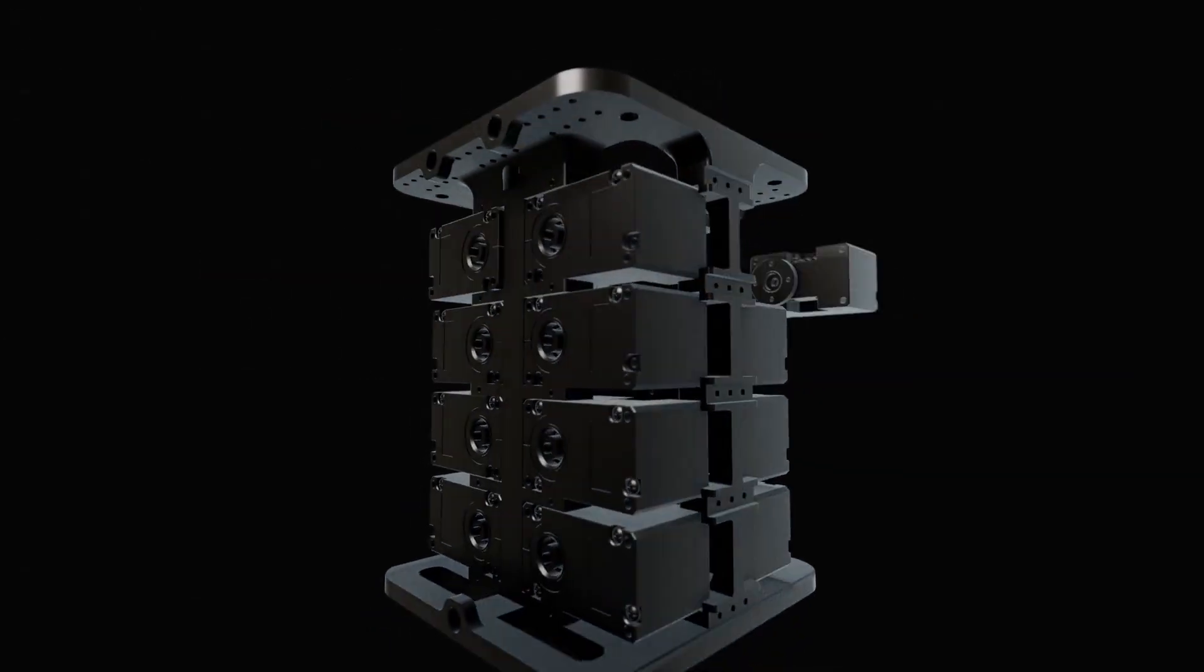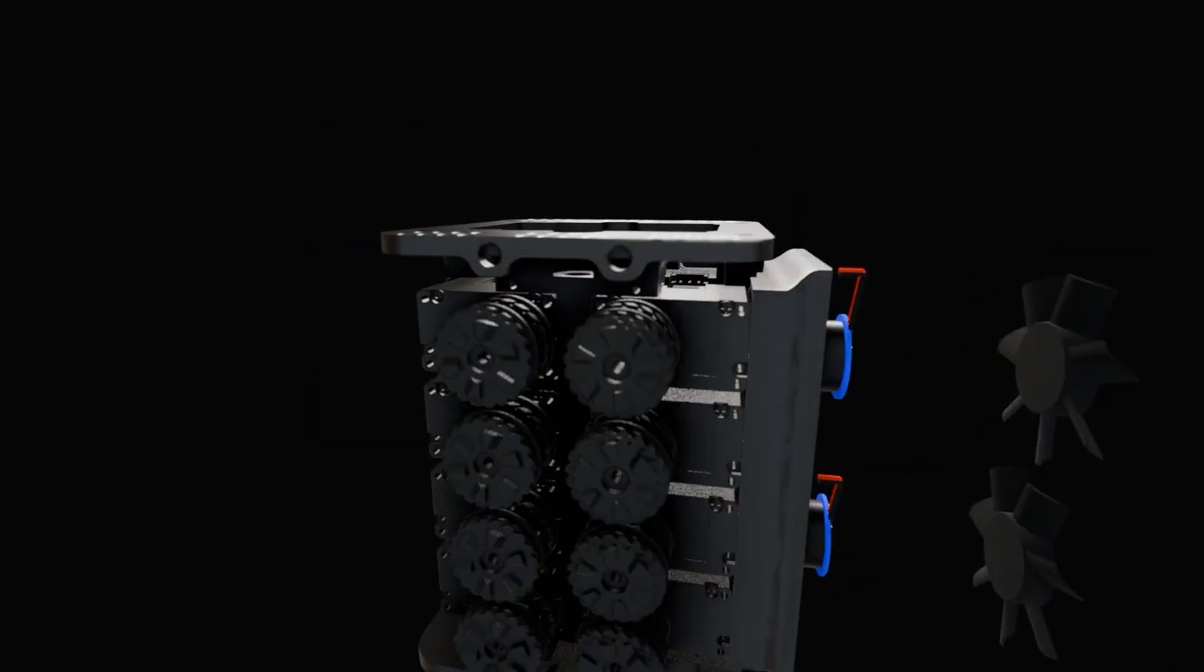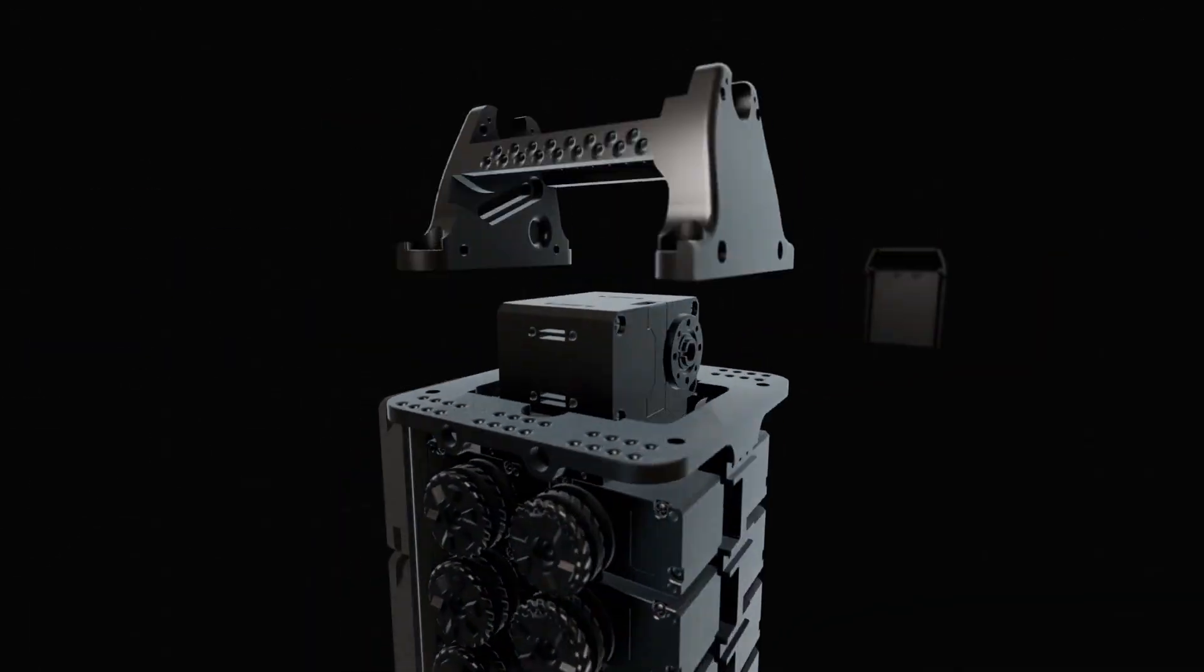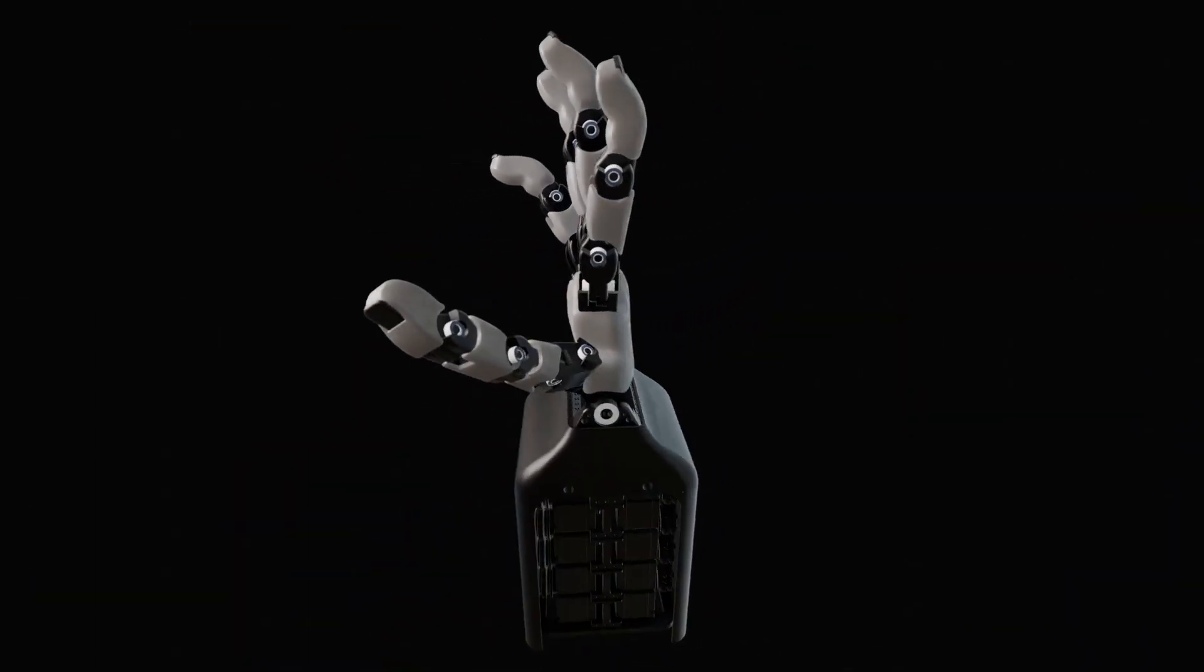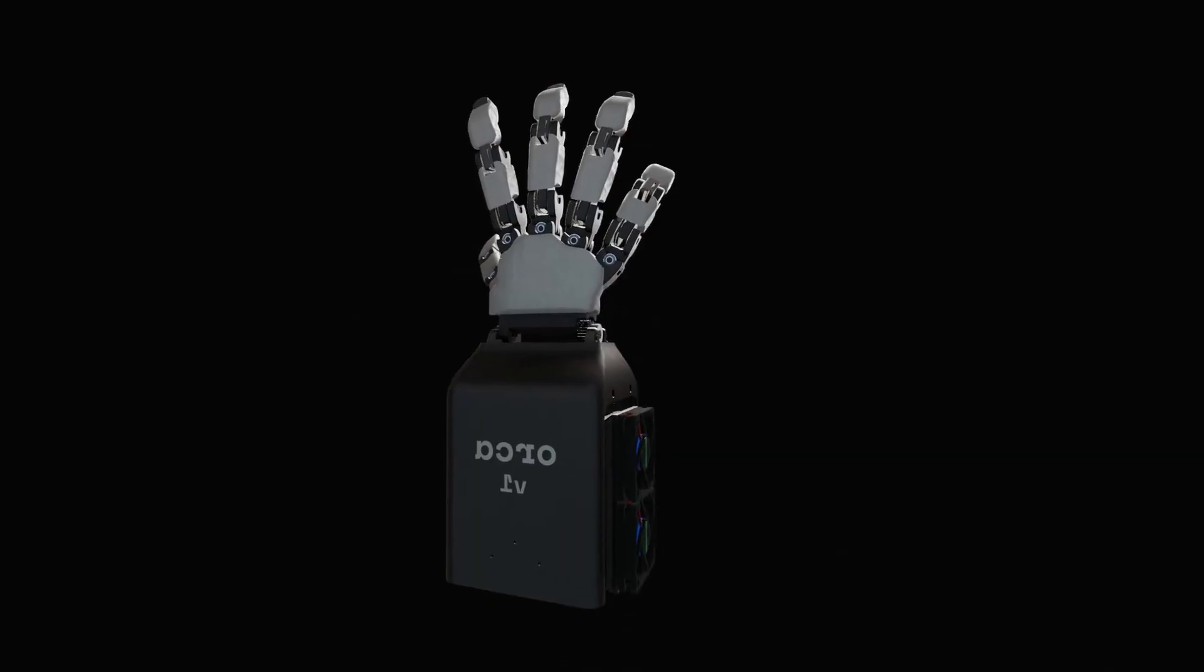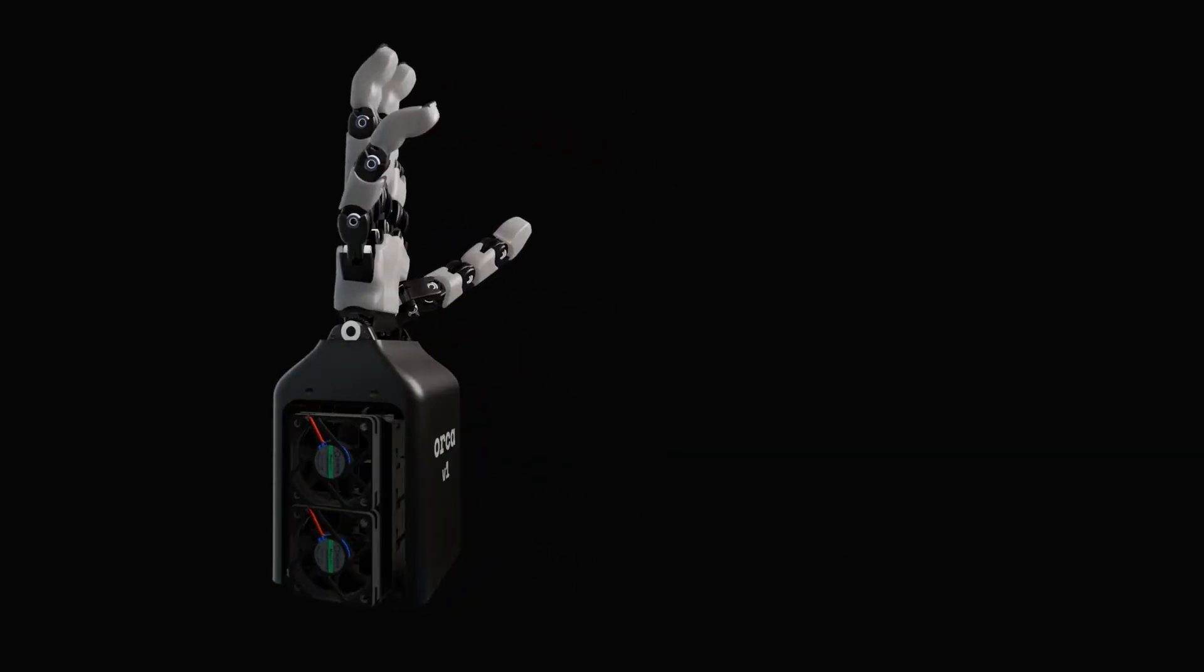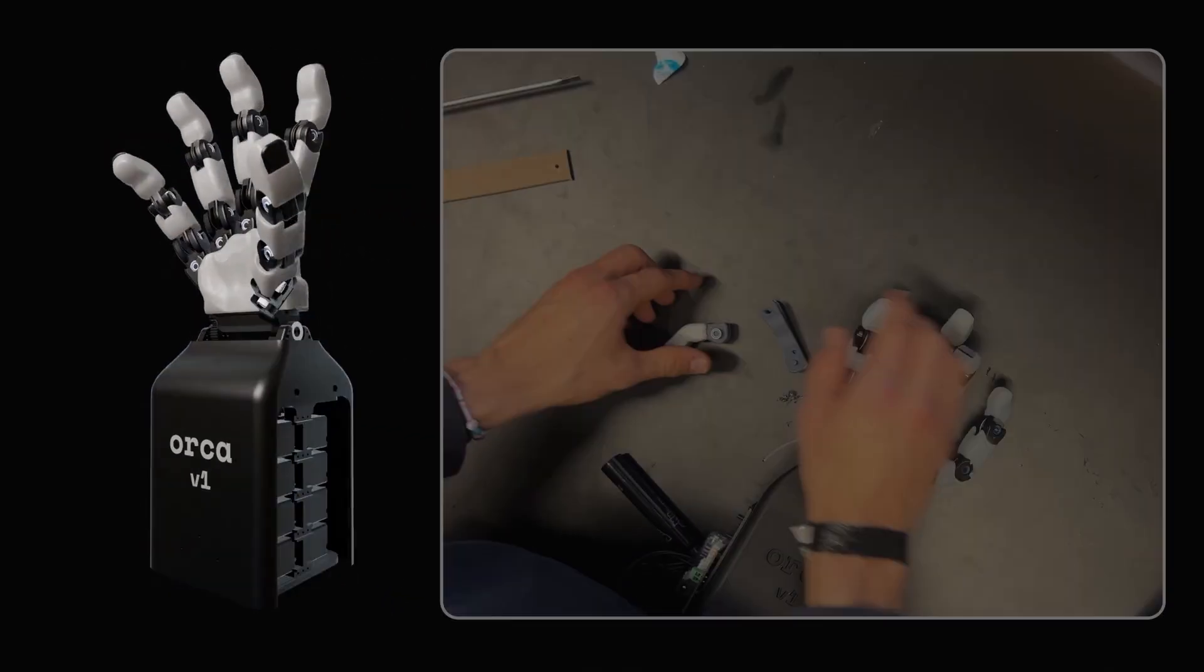What if the research community could get started with reliable dexterous hands within a day? We present the Orca hand, a tendon-driven robotic hand with fully integrated tactile sensors that can be assembled in under eight hours with a material cost basis of only $2,000.